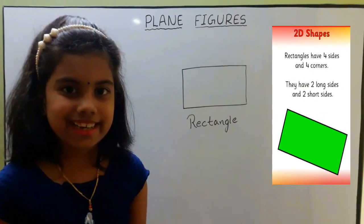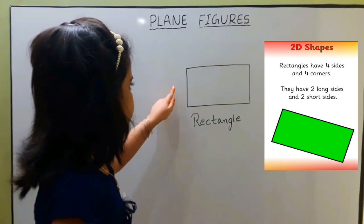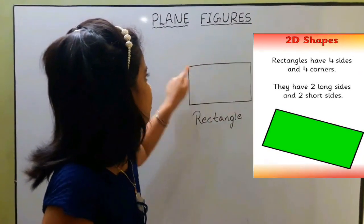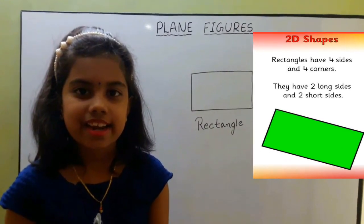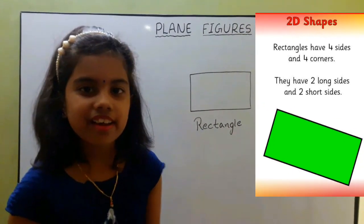Next one is rectangle. The rectangle has four sides and four vertices. The area enclosed inside the rectangle is called rectangular region.